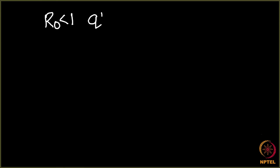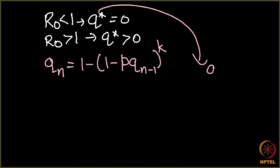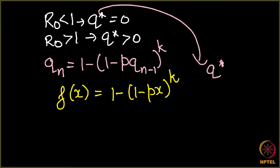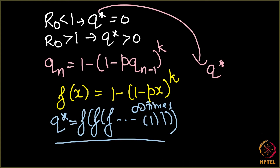Let us quickly recap. Our aim is to show that if r0 < 1 then q* = 0, and if r0 > 1 then q* > 0. We found a formula for q_n which was 1 minus (1 minus p * q_{n-1})^k. Our aim is to find q*, and we defined a function f(x) = 1 minus (1 minus px)^k. We established that q* is f(f(f(...(1)...))) applied infinitely many times, and this is the value we are after.